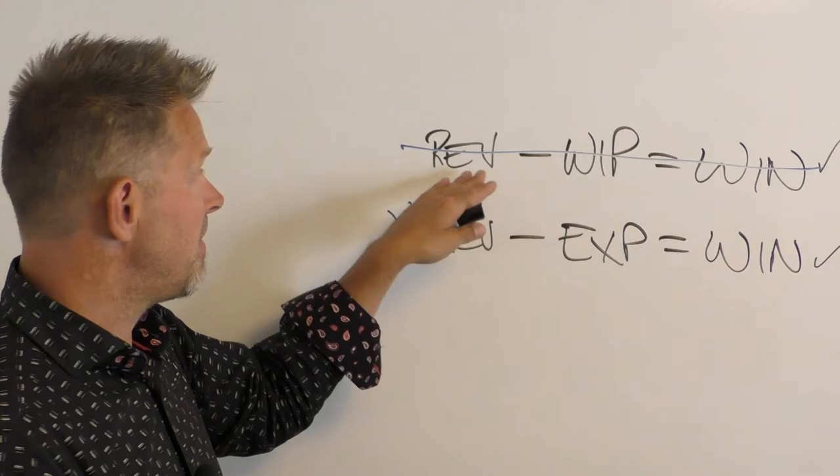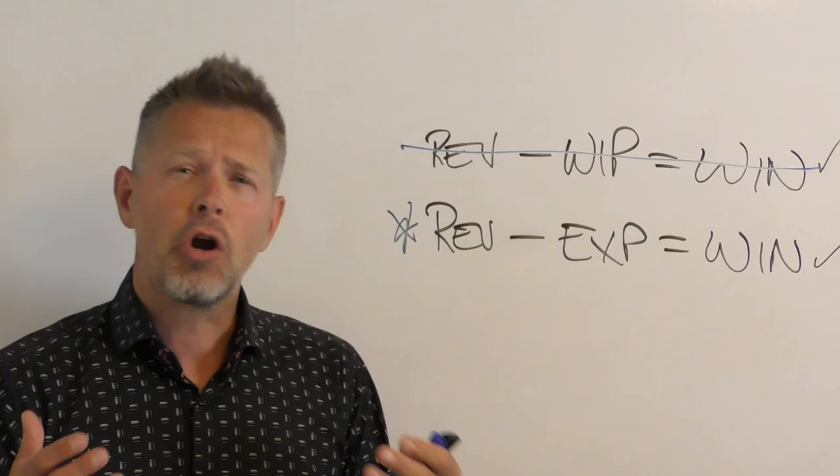That's how you win. You don't win by having revenues over WIP. That's a fictitious number. And it's like I said, it's hard enough running an accounting practice.